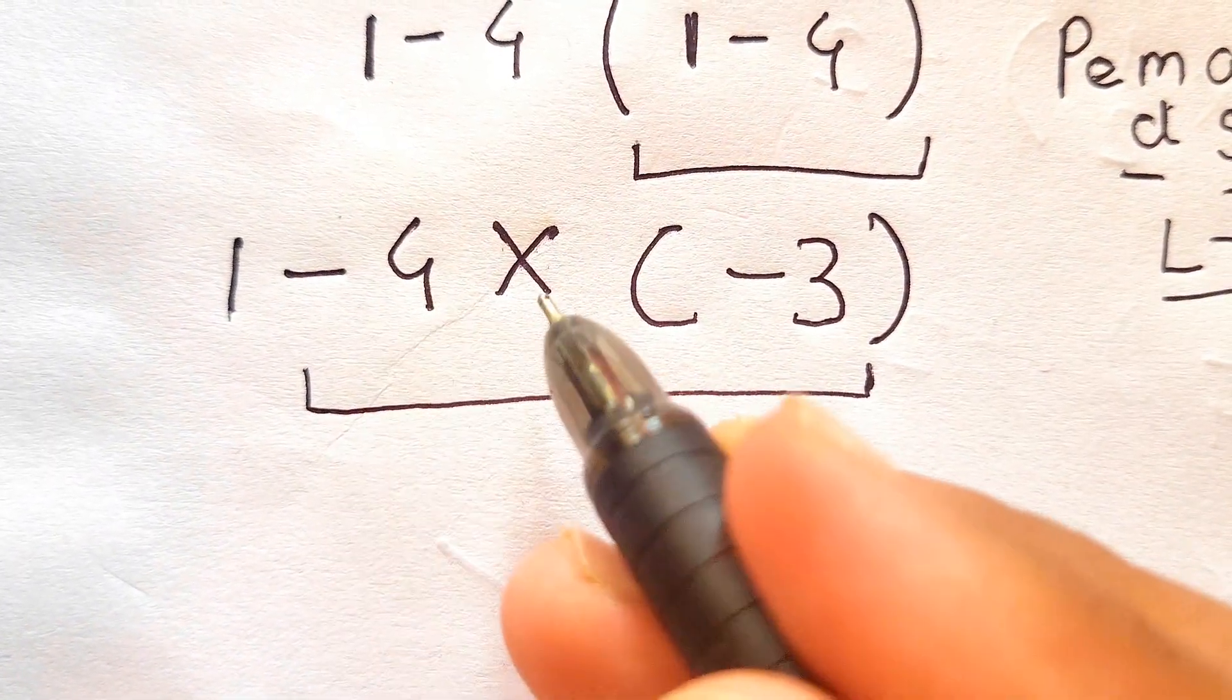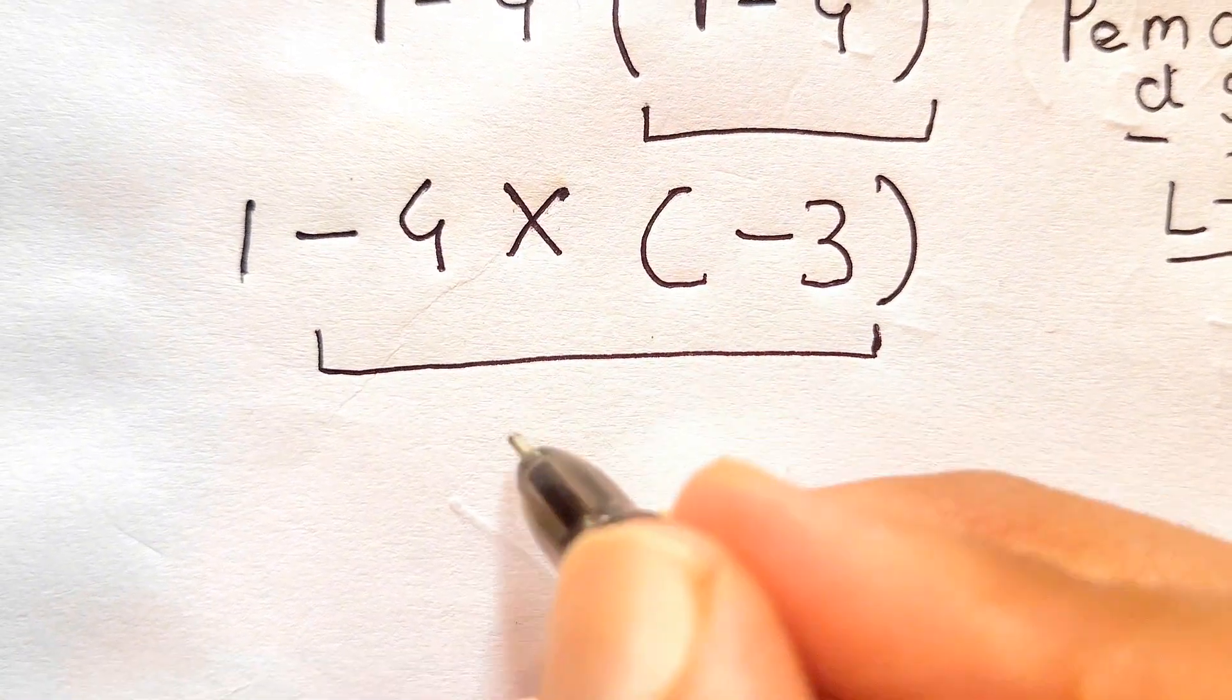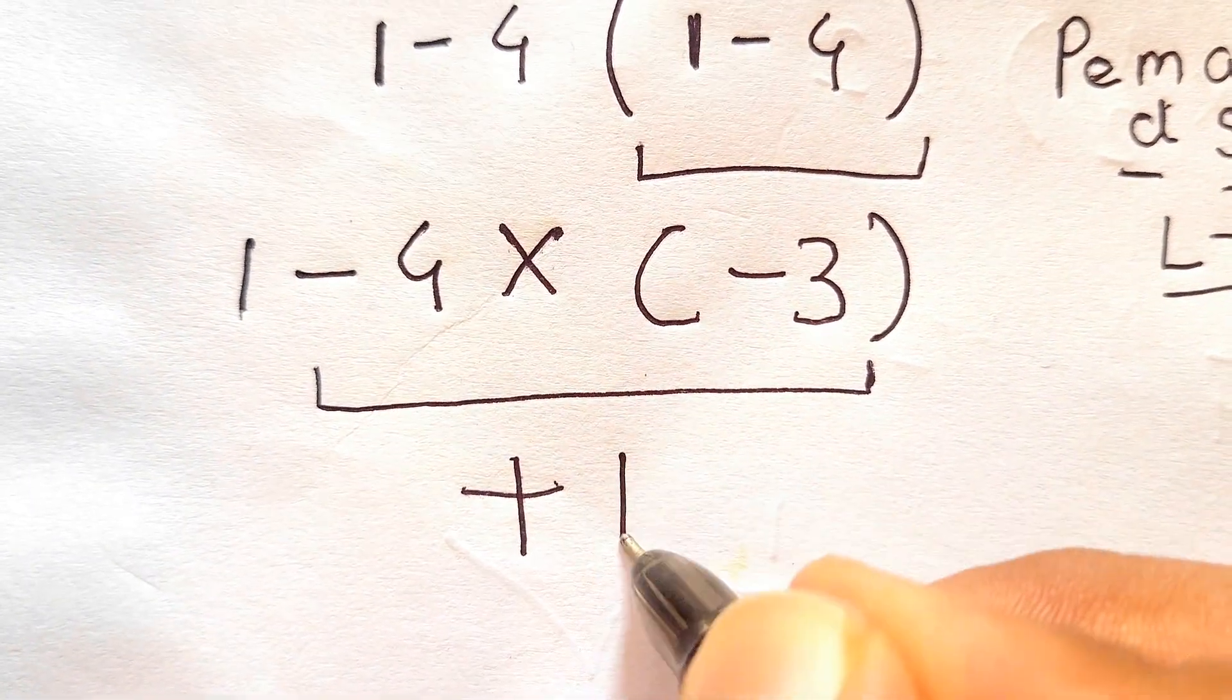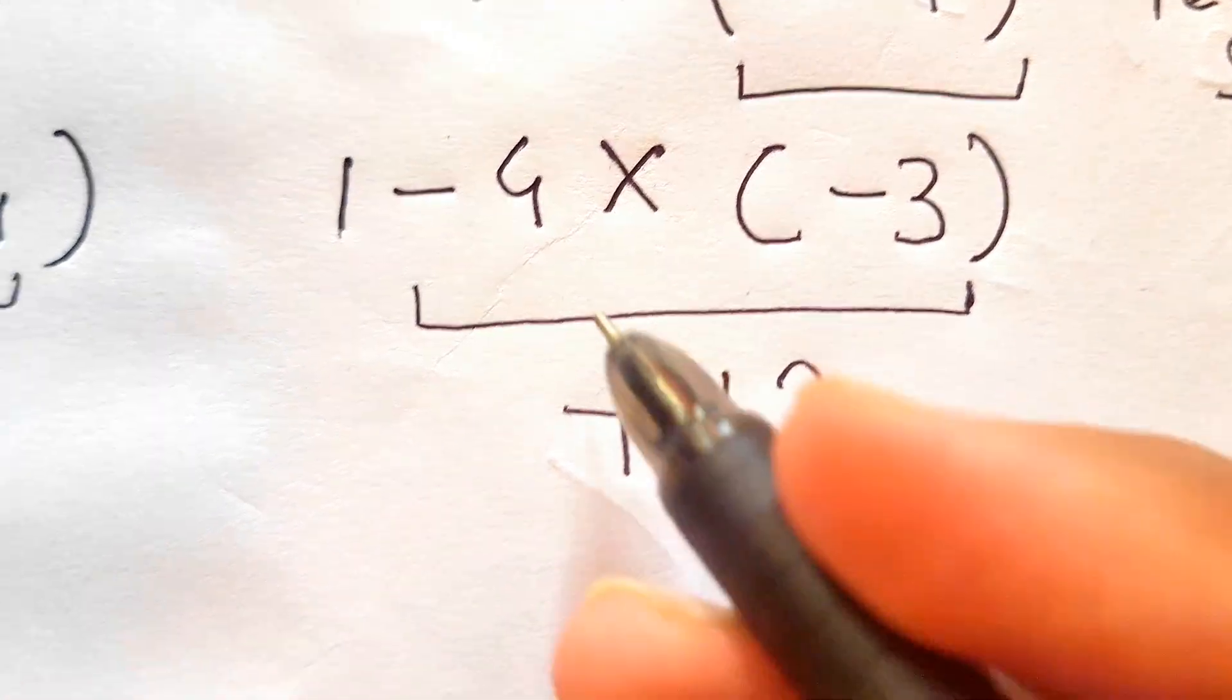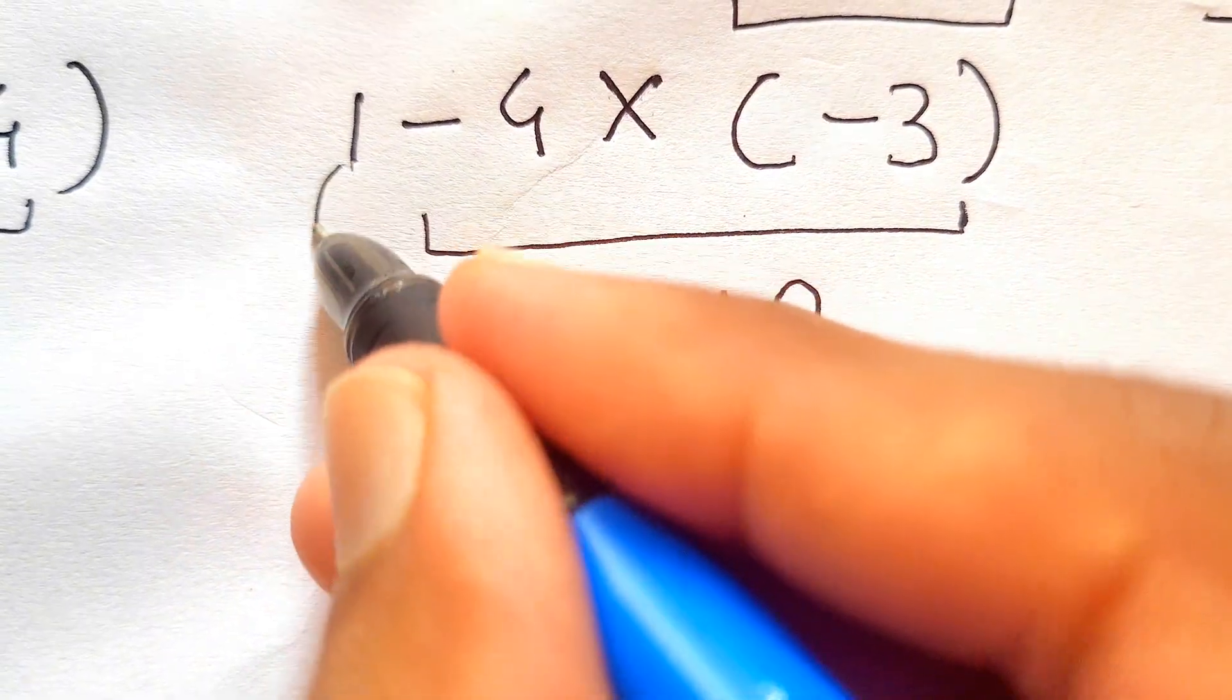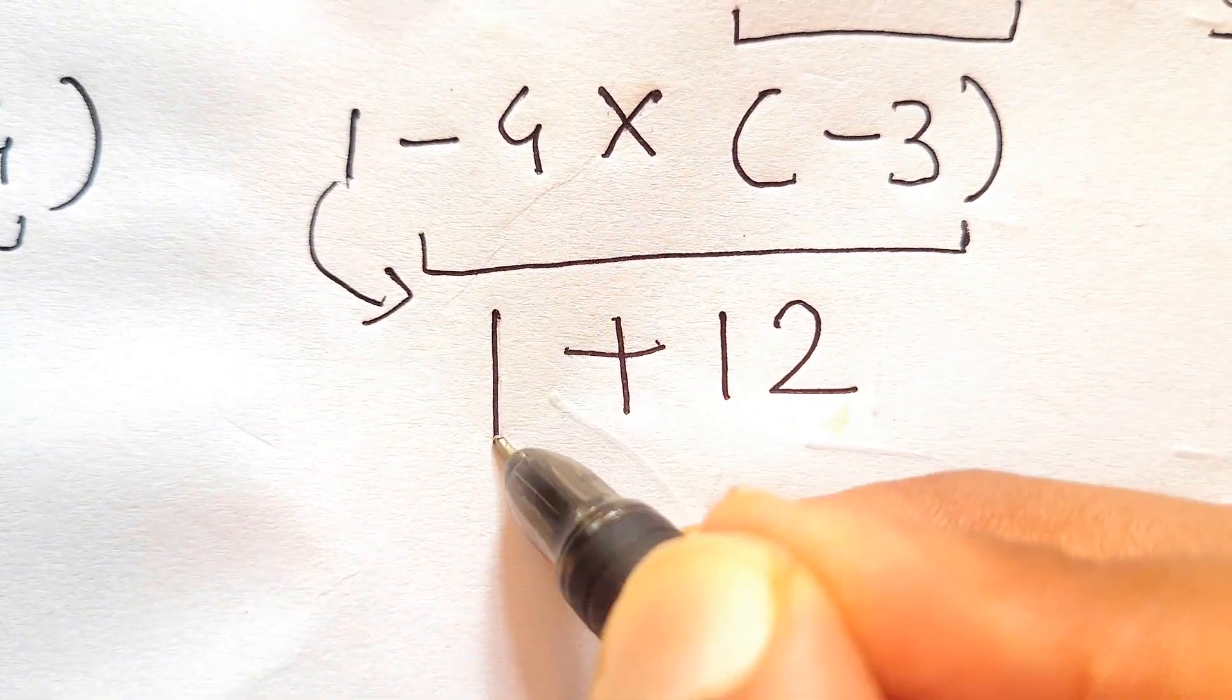So in this expression we'll solve negative 4 times negative 3. As we know, if we multiply two negative numbers then we get the answer as positive, so it gives us positive 12.